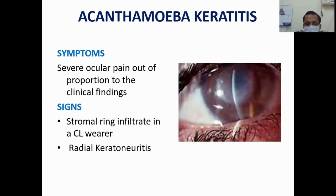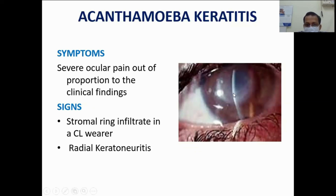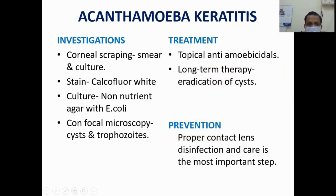Symptoms of acanthamoeba keratitis are out of proportion to the clinical findings — unlike fungal corneal ulcer where findings exceed symptoms, here symptoms exceed findings. When findings are present they include a stromal ring infiltrate or radial perineuritis. Diagnosis is confirmed by corneal scraping for smear and culture, calcofluor white stain, culture on non-nutrient agar with E. coli, or confocal microscopy to visualize cysts and trophozoites.